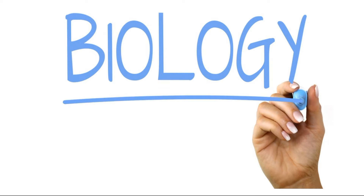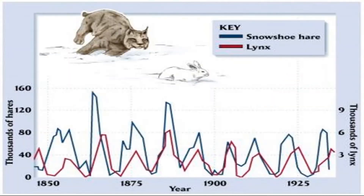Today we look at this increase and decrease pattern — the oscillating pattern seen in populations — and how one of these environmental factors, namely competition, results in this oscillating pattern. This oscillating pattern of an increase followed by a decrease, followed by an increase again, can be seen when examining populations such as the snowshoe hare and the lynx.